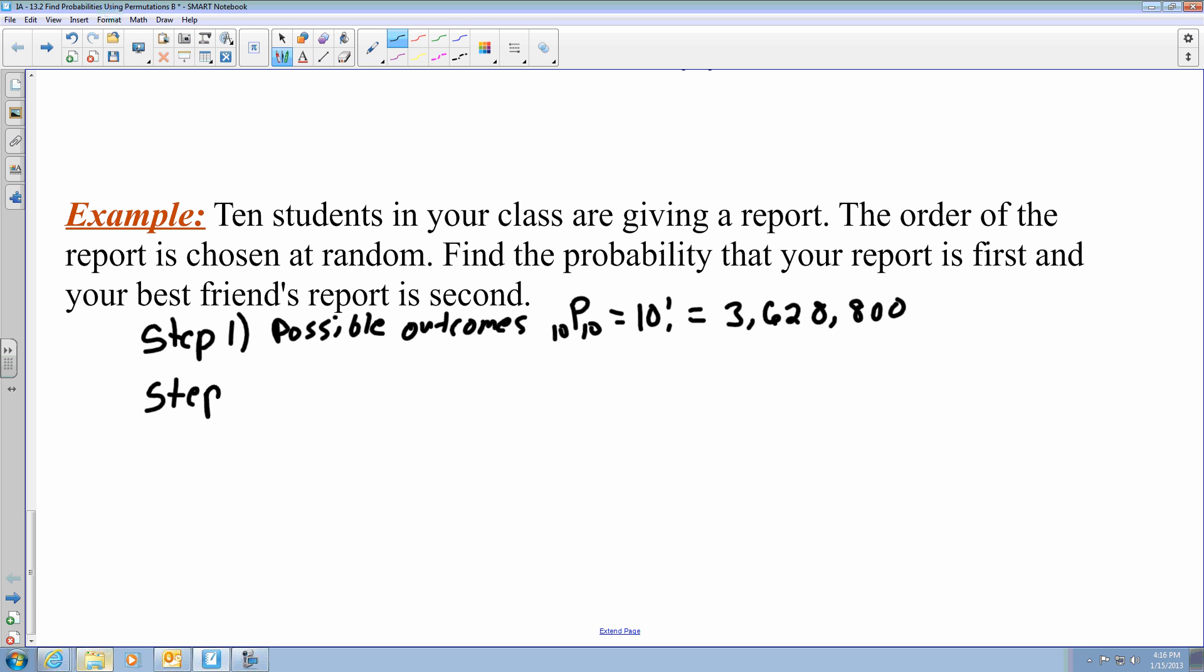Step two is we want to find the number of favorable outcomes as the number of permutations of the other students where we make the assumption that you will be first and your best friend will be second. So we can then take the most favorable outcome, where you're first and then your best friend's second. So that means that we're left with 8 more students. So what I need to do is I need to find the number of arrangements with 8 factorial.